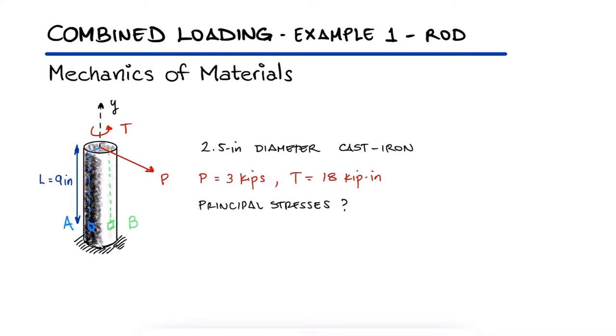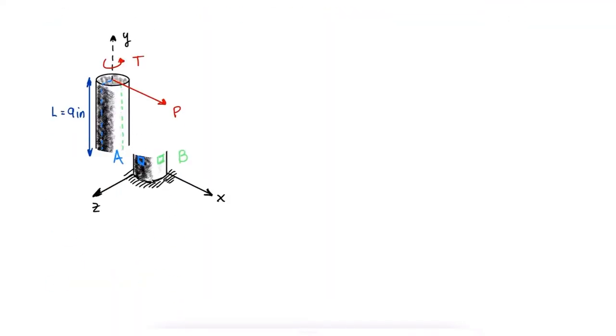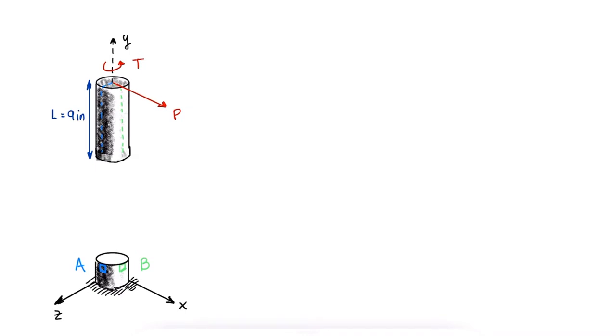This is the first example for the combined loading main video, link below. Following what we learned during that video, we know that our goal is to find the stress state for both elements A and B, and to do that, we need the stresses and therefore the internal loads at a cross section 9 inches from the top surface.